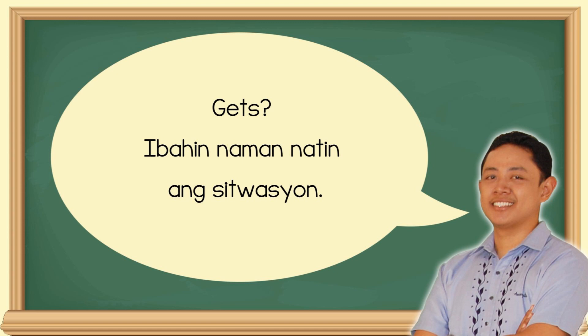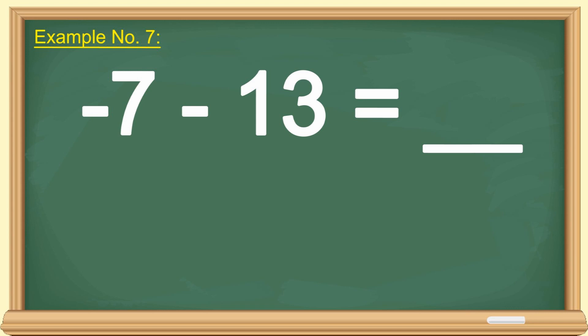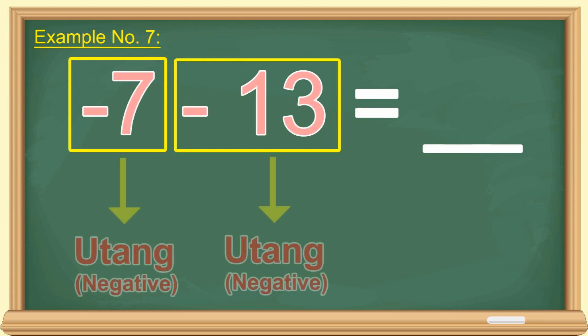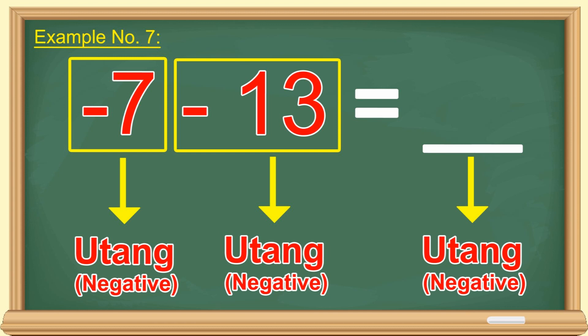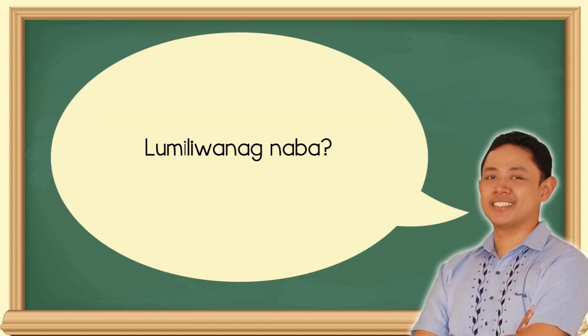Gets? Ibahin naman natin ang sitwasyon. Negative 7 minus 13 is equal to blank. Gaya ng nauna, paghiwalayin natin ang mga numbers. At ang minus ay laging sumasama sa next number. So, meron na tayong negative 7 at negative 13. Pagsamahin, anong meron? Parehong utang o parehong pera? Parehong utang. At pag pinagsama mo ang utang mong 7 pesos at ang utang mong 13 pesos, magkano na lahat ang utang mo? 20 pesos at dahil utang, negative 20 siya. Lumiliwanag na ba?